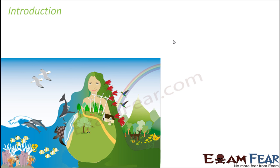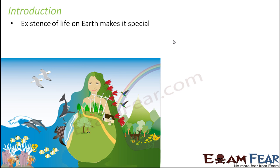What are we going to talk about in conservation of plants and animals? Why do we even want to conserve plants and animals? The screen shows you the Mother Earth. On Earth exists life, and that is what makes Earth unique from other planets. It is not only human beings which survive on this Earth, but also a huge variety of other animals, birds, microorganisms, and plants. It is our duty to take care of all these living organisms, and in this lesson we will see how we can conserve plants as well as animals, because the existence of life on Earth makes it special.